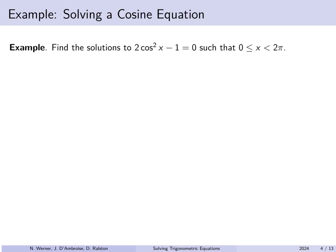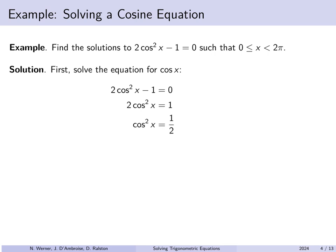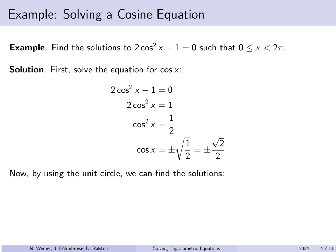Now let's find solutions to 2cos²x − 1 = 0, where x is between 0 and 2π. First, let's solve for cos x. Starting with 2cos²x − 1 = 0, we add 1 to both sides, divide by 2, and find that cos x = ±√2/2. Within the unit circle, we're looking for angles with a horizontal coordinate of either +√2/2 or −√2/2. There are four such angles: π/4, 3π/4, 5π/4, and 7π/4.